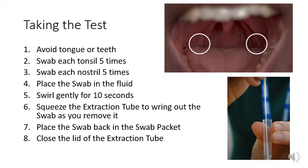To take the test, you need to avoid your tongue and your teeth. You should swab each tonsil five times in an upwards and downwards motion. You then need to swab each nostril five times, rotating the swab.